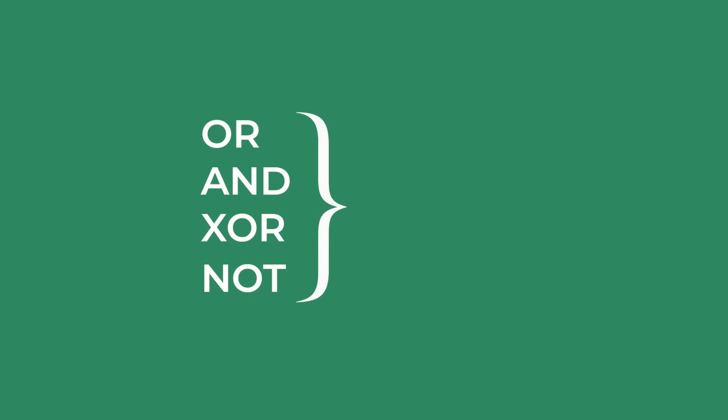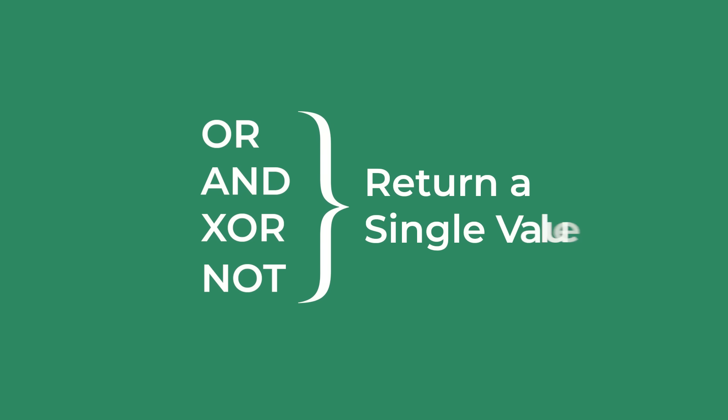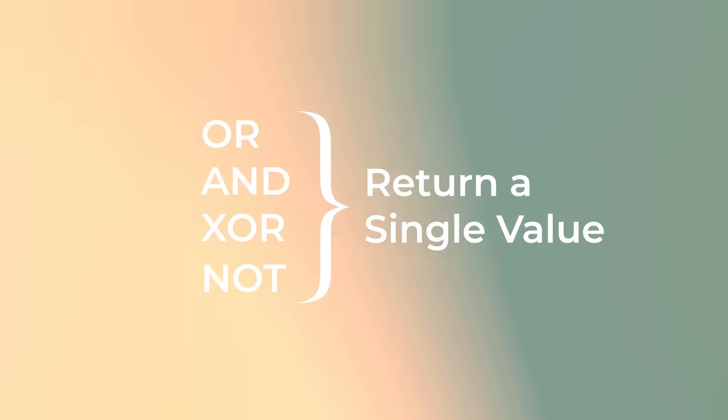OR, AND, XOR, and NOT can only return a single value — they can't spill results or return arrays of Boolean values when nested inside other functions. This means you can't use them in functions like FILTER, SUM, SUMPRODUCT, etc. But we can use pure logical tests: multiply for AND, and plus for OR.